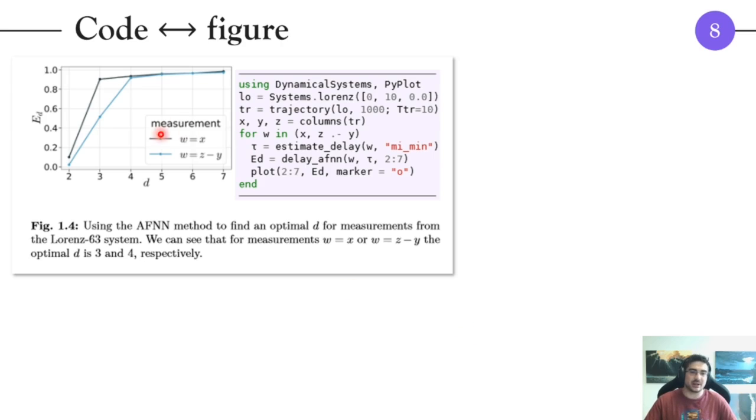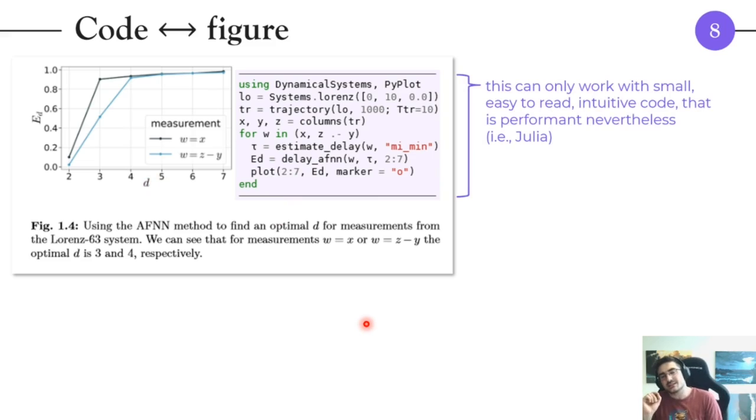For this particular topic the code looks like this. On the left side we have a figure and on the right side we have a code snippet that produces that figure. Now you can only understand this code snippet in the context of the chapter of course. I don't think you would be able to understand this by looking at it, but of course for someone that has read the chapter, they know already the method to compute the optimal embedding dimension and they can understand what's going on. This can only work with small, easy to read, intuitive code that is nevertheless performant. This can only work with Julia, that's pretty much what I'm saying. The other thing that you will notice is that these functions that you see here implement the algorithms for choosing the optimal embedding dimension and delay time from the DynamicalSystems.jl library.